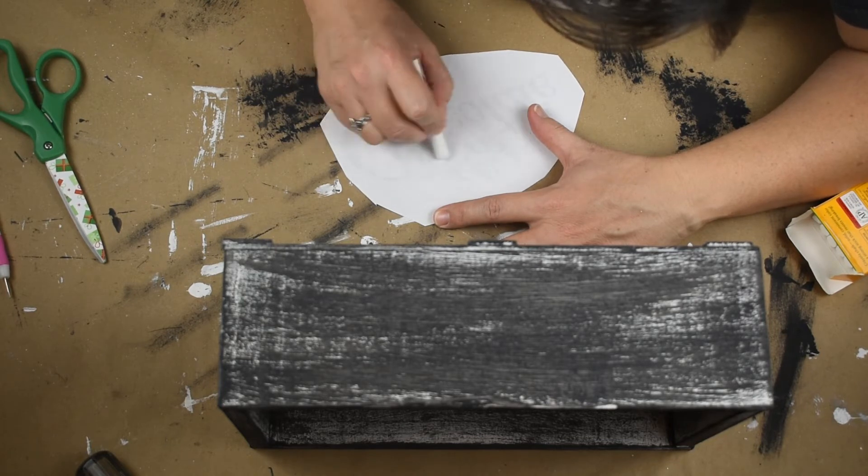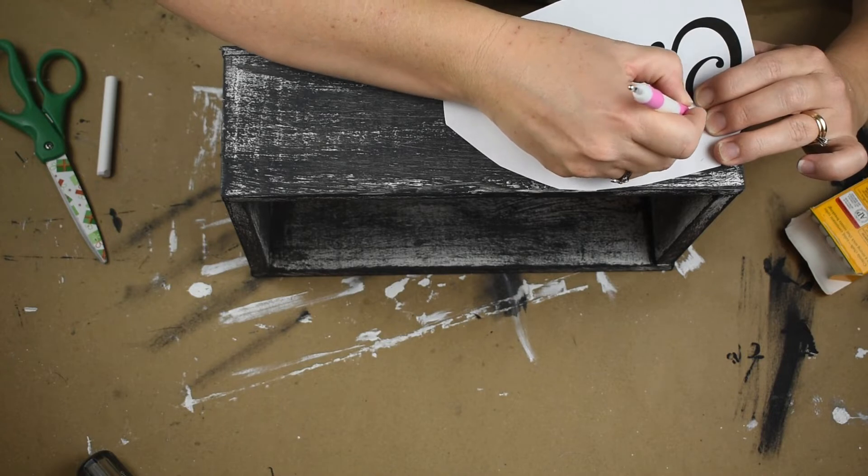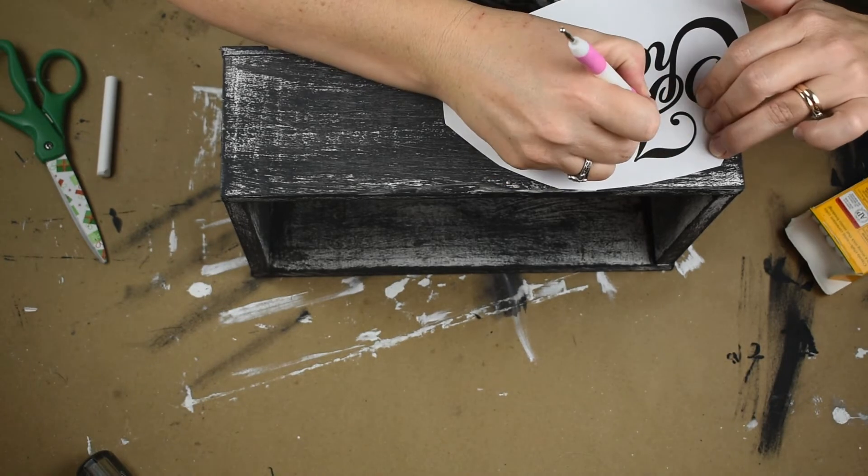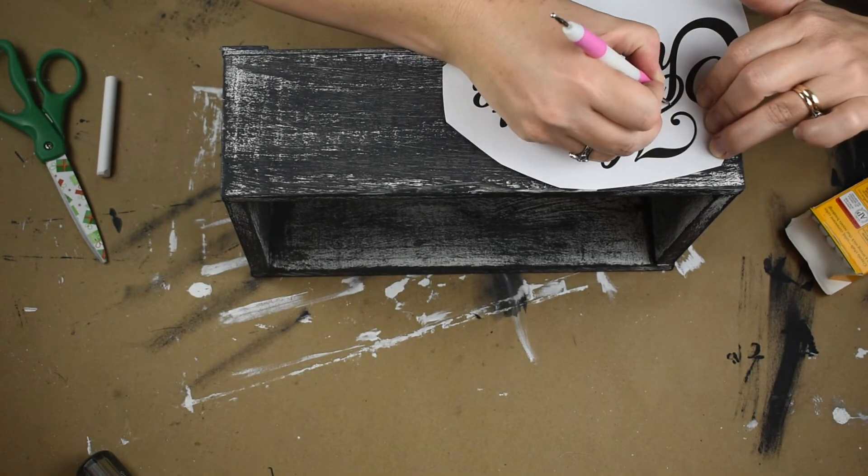And then I put it onto my project and I'm using just one of those embroidery thingamabobber things, I don't know. Anyway, you can pick it up over at Dollar Tree. You could use a pencil, whatever you want to use.